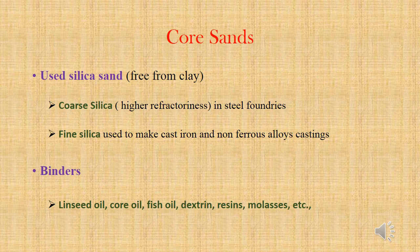Core sand is made of silica sand which is free from clay. Coarse silica is used in steel casting, and fine silica is used in cast iron and non-ferrous alloy casting. Some binding agents like linseed oil and core oil are used as binders.